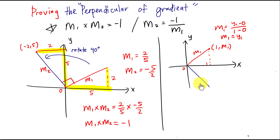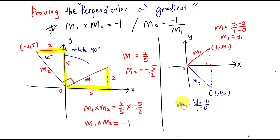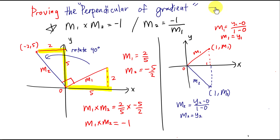For another line that may be perpendicular to it, I do the same thing. I assume the same unit of 1 on the x-axis, so this coordinate is (1, y2). The second gradient m2 = (y2 − 0) / (1 − 0) = y2. So I can replace y2 with m2, meaning this coordinate is (1, m2). Now I'll use the length formula: the distance between two points is the square root of (x2 − x1)² + (y2 − y1)².